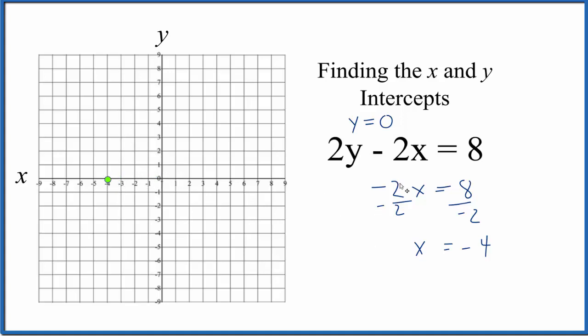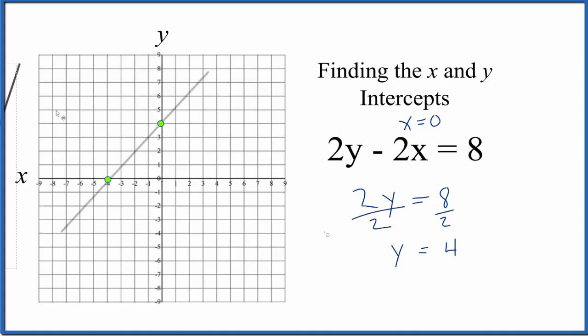Likewise, we could set x to 0. And when x equals 0, we have 2y equals 8. Divide both sides by 2, and now y equals 4. So when x is 0, right here, y would be 1, 2, 3, 4. So now we have two points. We can put a line through it. And that's the graph for the linear equation 2y minus 2x equals 8.